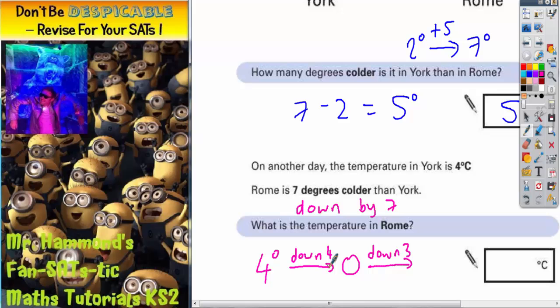Because altogether, 4 and 3 make 7. So then we will have gone down 7 altogether. So if we go down 3 from 0, we'll get to negative 3. So the answer is negative 3 degrees.